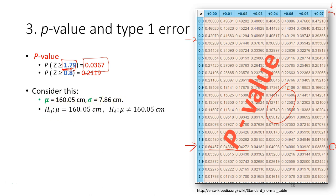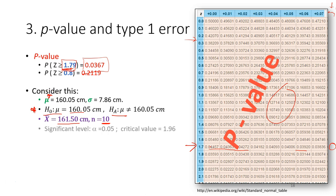Using the same example as the previous lecture, we have the population mean and standard deviation. The first step is to construct the hypothesis — the null and alternative hypotheses must come in a pair, so that when we reject the null we accept the alternative. We then set the significance level: alpha equals 0.05, and identify the critical value.